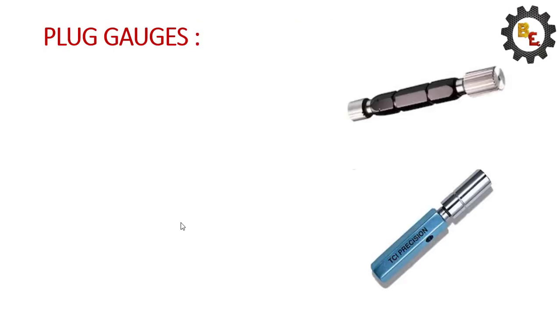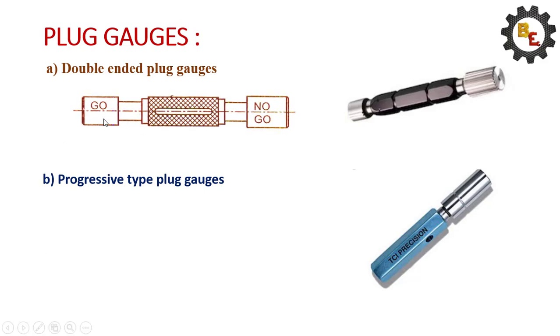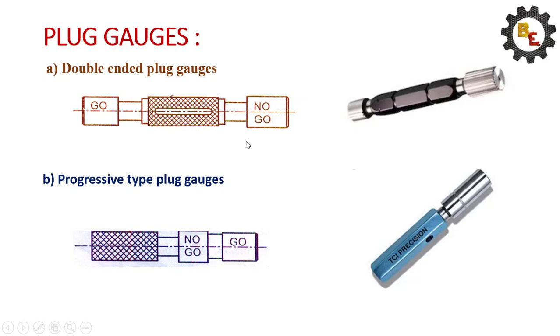Let's see the plug gauges. Double-ended plug gauges and progressive-type plug gauges. In double-ended plug gauges, go end will be on one side and no-go end will be on one side. In progressive-type plug gauges, go end and no-go end are both on one side of the plug gauge. So we can measure by using these gauges. These progressive gauges will take less time compared with the double-ended plug gauges.